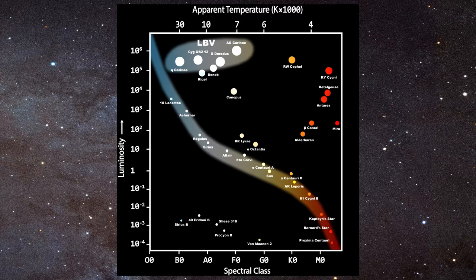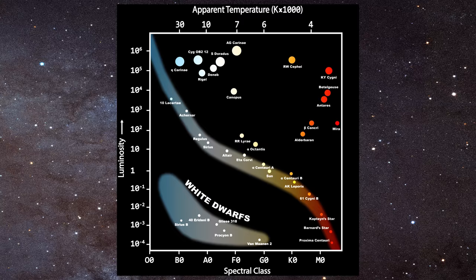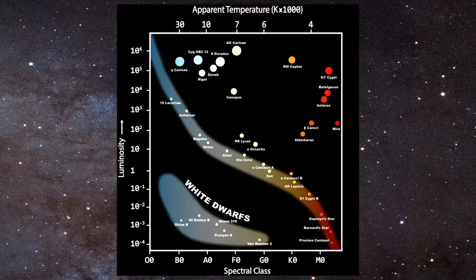Finally, on the lower left hand portion of the plot we find the white dwarfs. These are stars of high mass and temperature but relatively low luminosity. They are amongst the most fascinating stars in the sky and we will return to these in a future video.